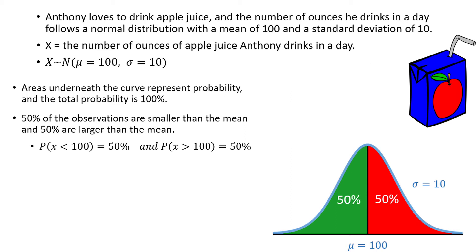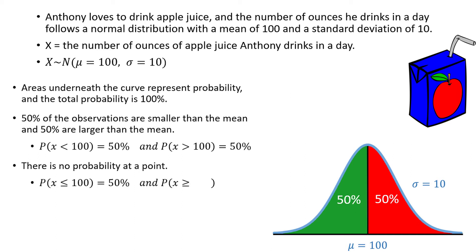Also, since the normal distribution is a continuous distribution, there is no probability at an individual point. So we can also write the two previous statements as the probability x is less than or equal to 100, and the probability x is greater than or equal to 100, and they will still both be equal to 50%. The probability x equals any individual value is equal to 0, such as the probability x is equal to 100. Anthony will never drink exactly 100 ounces of apple juice in a day. He might be very close, such as 99.9976 ounces or 100.0013 ounces, but if we measure out far enough, the probability of x equaling exactly some number will be 0 for any continuous distribution.